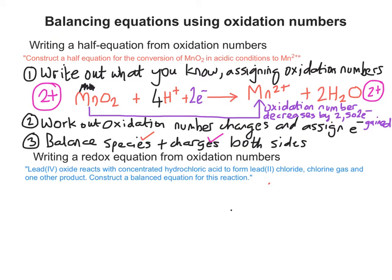So writing a redox equation from oxidation numbers is often worded in this manner. This would be worth about 3 marks or so in an exam. So what we do is exactly the same as what we did at the top. That is, write out what you know. And we can assign oxidation numbers as well.